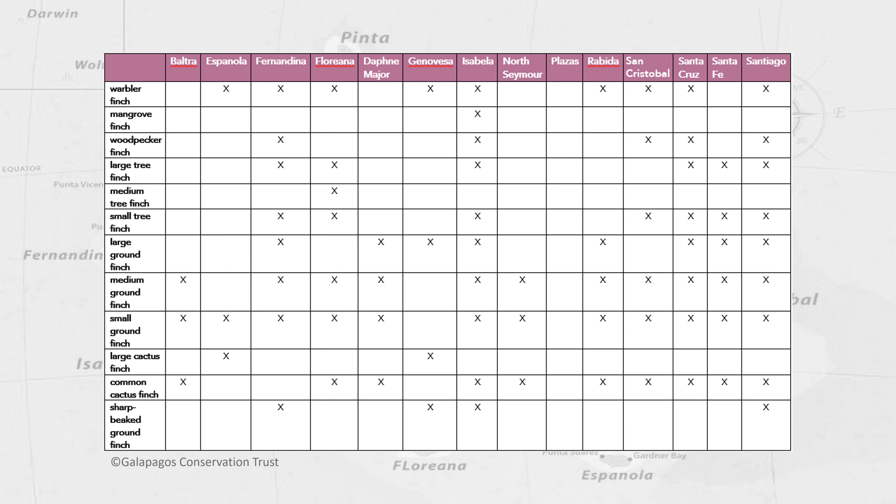Exposure to these varieties of conditions explains why some finch species are found on almost all the islands, such as the small and medium ground finch, whereas woodpecker finches and mangrove finches are only found on one or two.